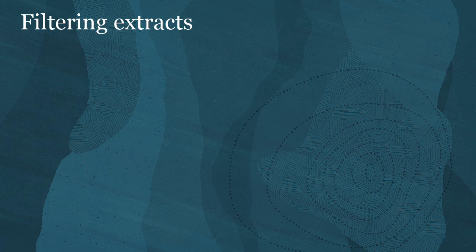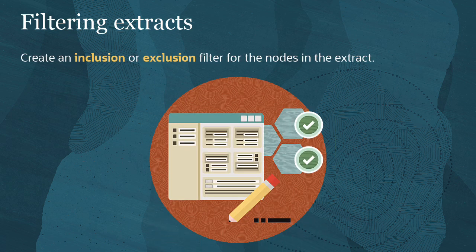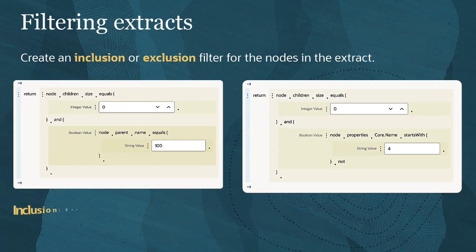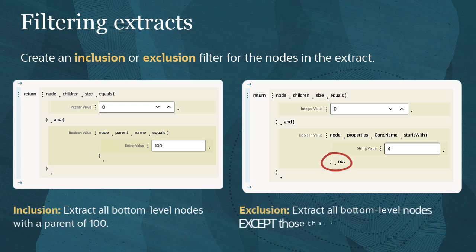For any extract type, filter expressions enable you to create an inclusion or exclusion filter for the nodes in the extract. For example, your extract can include all nodes with an ancestor of 100, or exclude all nodes whose names start with 4.